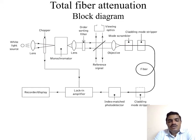Then we use an order sorting filter to permit a certain range of signals in a specific order. This is followed by viewing optics, where we analyze the fiber optic cable to determine in which mode the signal propagates—whether optical line-of-sight propagation, axial propagation, skew ray propagation, or meridional propagation. These types of propagation are viewed and measured in the viewing optics part.